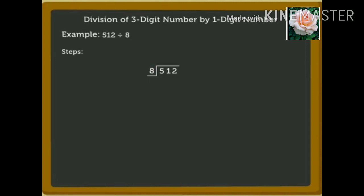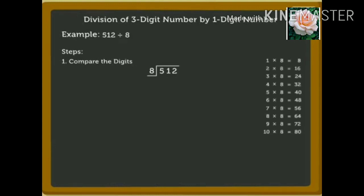Firstly, compare the digits. We compare the leftmost digit of the dividend with the divisor. The leftmost digit is the digit in the hundreds place, that is 5. Since 5 is smaller than 8, we consider the digits 51 together. 51 is greater than 8. So, using the table of 8, let us find the product which is equal to or less than and nearest to 51. The nearest product is 48, as 6 times 8 equals 48.